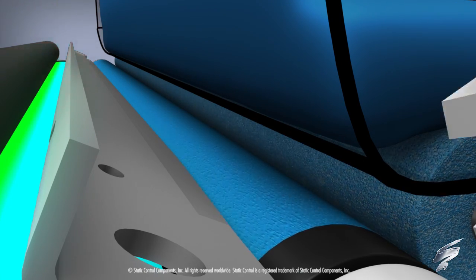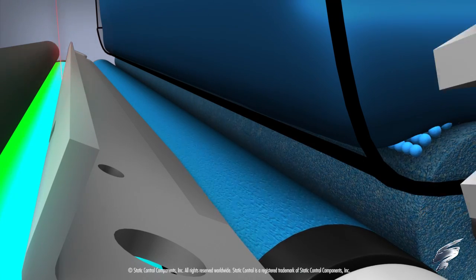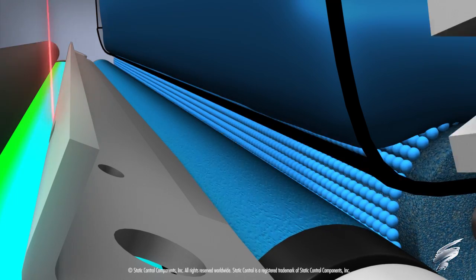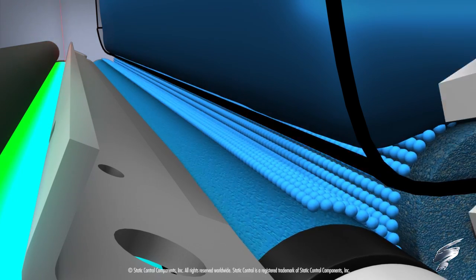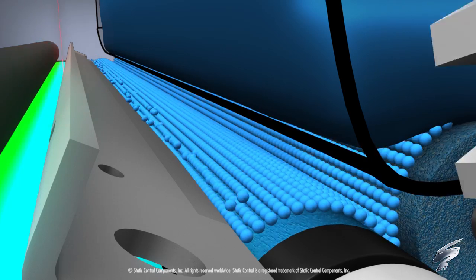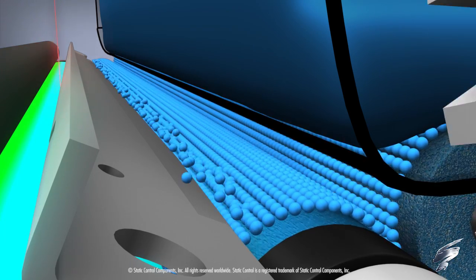Toner is stirred in the hopper, and the toner adder roller collects the toner, moving it to the surface of the developer roller. The doctor blade then levels it to the precise height.